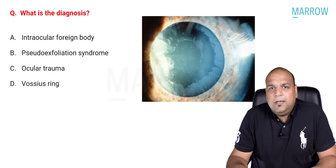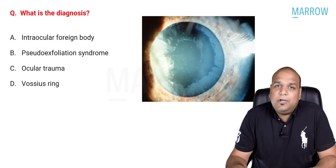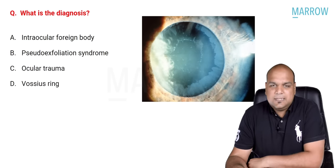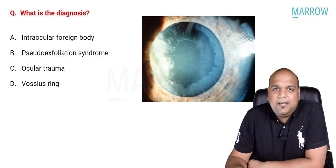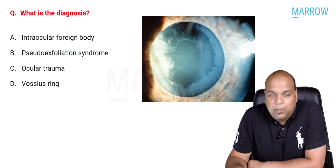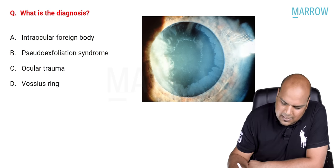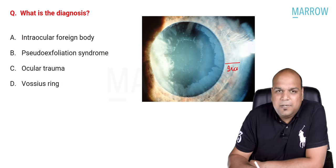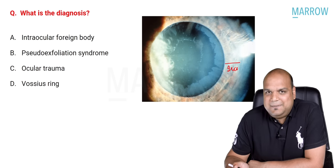Question number one was probably one of the easy identifiable questions if you had seen the image. It was an image-based direct question — what is the diagnosis? No history, nothing was given; it was straight away an image spotter. So let us spot the image. What do we see? We see the iris, the pupil is fairly well dilated, and we can see the lens.